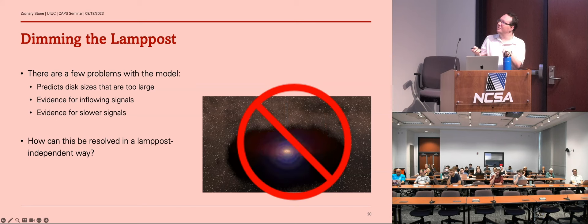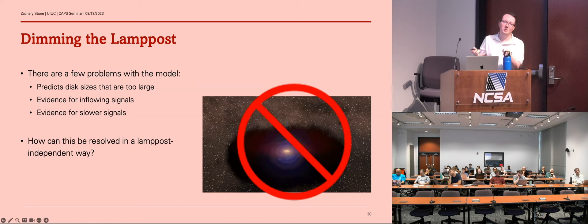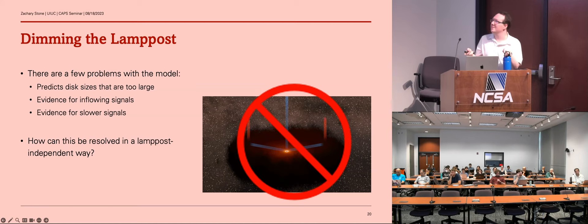However, there are a lot of problems with the lamppost model in accretion disk reverberation mapping study. So first off, if you do this, a lot of papers predict sizes of the accretion disk that are too large physically when comparing to theoretical models. Second, there is evidence for inflowing signals. Of course, if it's the lamppost model, you'd only see these outgoing signals. But there's evidence of negative time lags. And third, there are evidence for signals slower than predicted by the lamppost model, because these would be very quick, moving around the speed of light. But some predict around 10% or less of the speed of light. So how can we resolve these issues without assuming the lamppost model in our analysis?